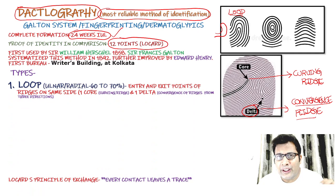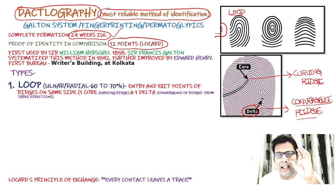Loop can be ulnar or radial. Entry and exit points are on the same side. There is one core present and one delta present. The core is the curving ridge and delta means convergence of the ridge. Loop accounts for 60 to 70 percent of cases.